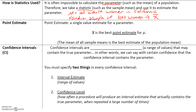Confidence intervals are interval estimates — a range of values that may contain the true parameter. We can say with certain confidence that the confidence interval contains the parameter.